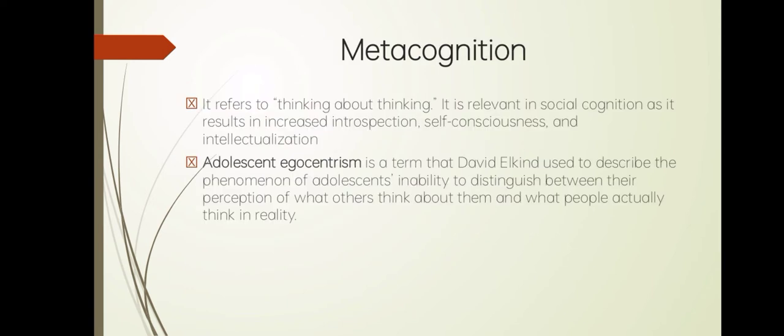Next is metacognition, which refers to thinking about thinking. It is relevant in social cognition as it involves an increase in introspection, self-consciousness, and intellectualization. Metacognition is an awareness of one's own thoughts and understanding of the patterns behind them. David Elkind used the term egocentrism to describe the phenomenon of adolescents' ability to distinguish between their perception of what others think about them and what people actually think in reality. Adolescents typically think others are more aware and attentive of their behavior and appearance than people actually are.